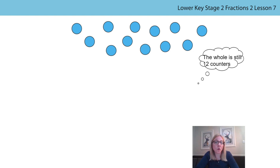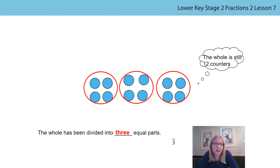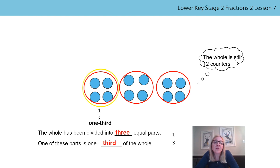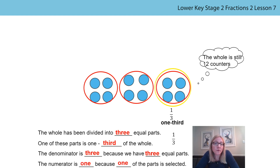This time I'm going to divide the whole into three equal parts, but before I do this I'd like you to have a go. Can you go and divide your objects into three equal parts? Pause the video to give yourself time. Let's see if yours looks like the image that I've created. The whole has been divided into three equal parts. One of these parts is one third of the whole. The denominator is three because we have three equal parts. The numerator is one because one of the parts is selected.